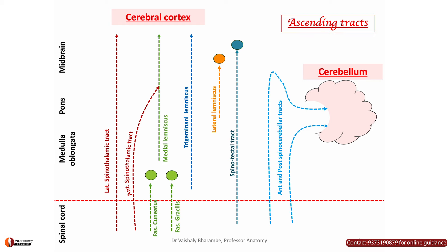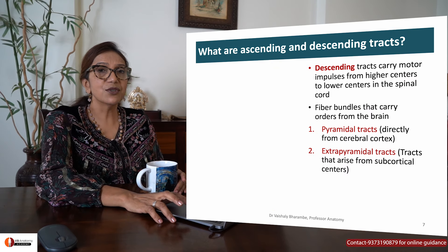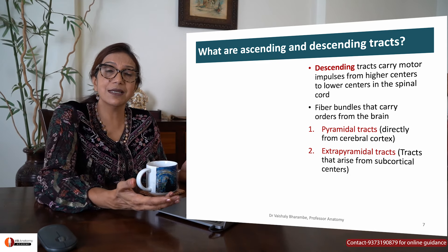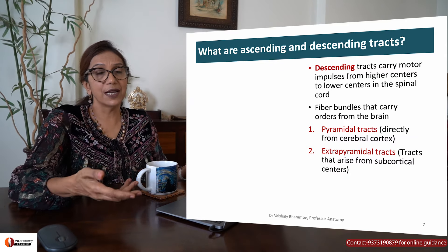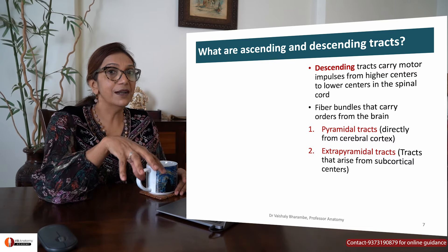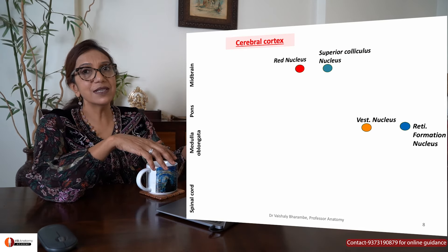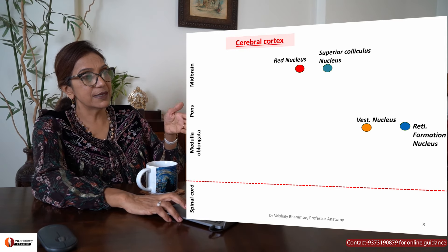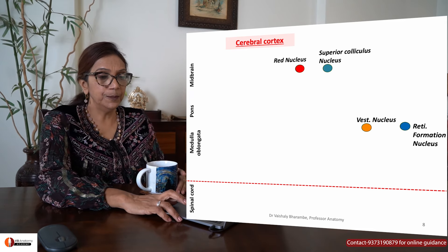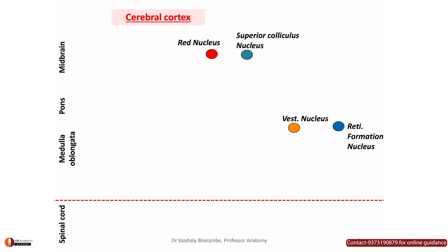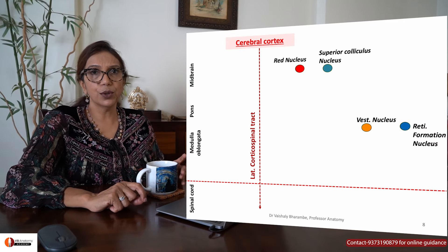So all these are ascending tracts through which the brain becomes aware of what is happening in the body. What is it going to do with all this information? It analyzes the sensory input and reverts through descending tracts. Now we come to descending tracts. The cerebral cortex receives information and gives rise to a tract which descends down — the lateral corticospinal tract. There are also anterior corticospinal tracts, coming directly from the cortex.